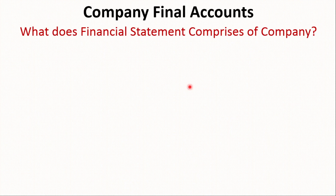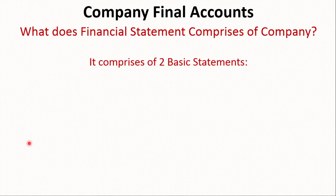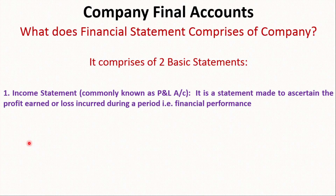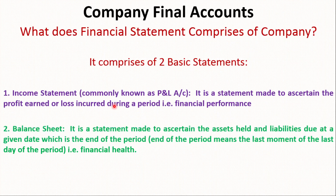The financial statement of a company comprises two basic statements. The first one is the income statement, which is commonly known as the profit and loss account. It is a statement made to ascertain the profit earned or loss incurred during the financial year — that is, the financial performance. This is the most important and key document of any company. In the case of company final accounts, it is known as the income statement, but we will call it the profit and loss account.